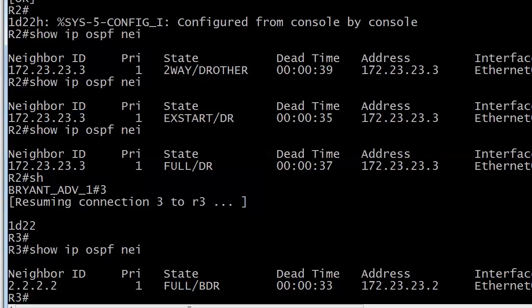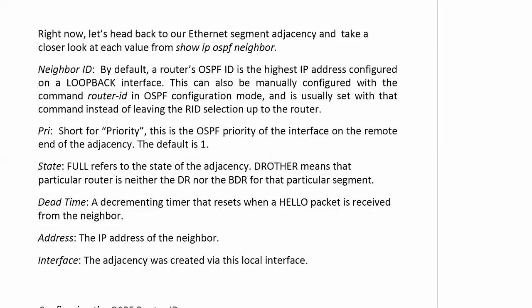The priority value - let's bring that back up. You can see it was 1 for both routers on their particular interfaces, Ethernet 0. This is the OSPF priority of the interface on the remote end of the adjacency, and the default for that is 1. From a CCENT perspective, this does have an impact on the DR/BDR election. If you watch that optional Udemy video, you'll see me change that and see how it impacts the election on a hub-and-spoke network.